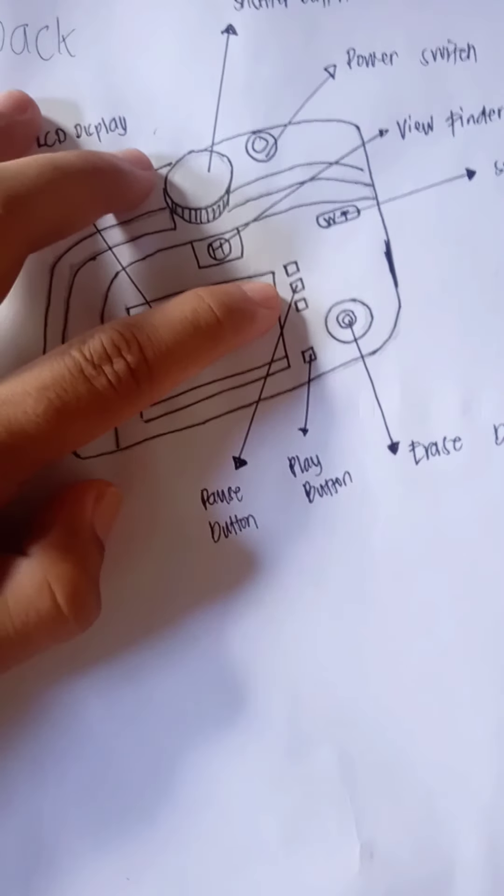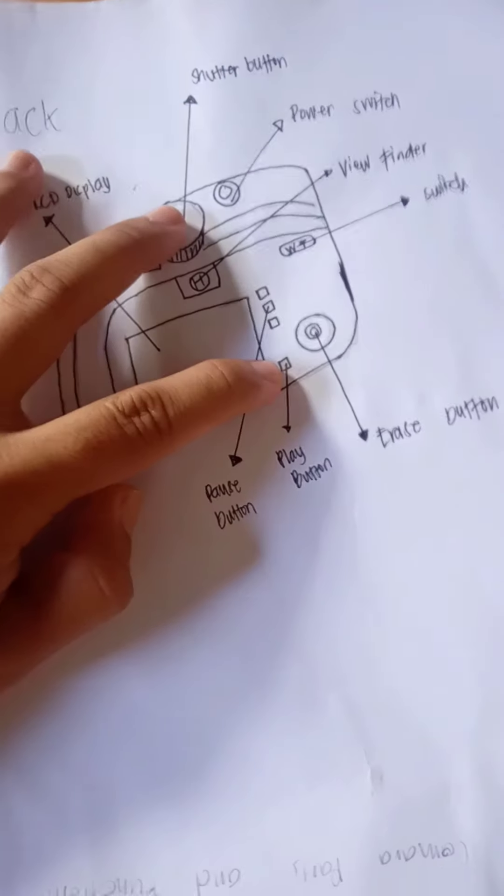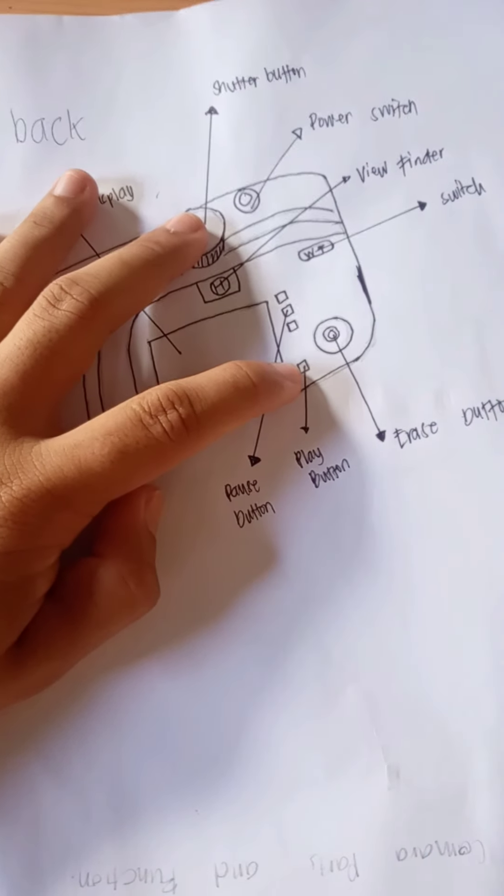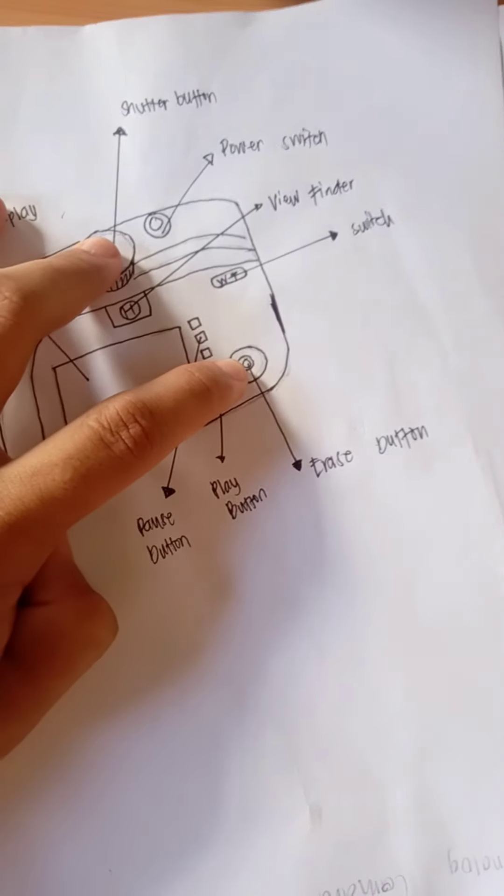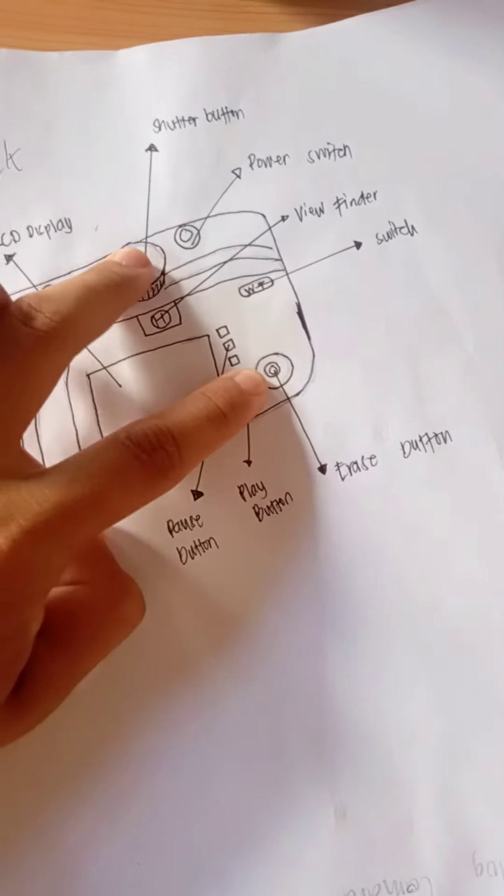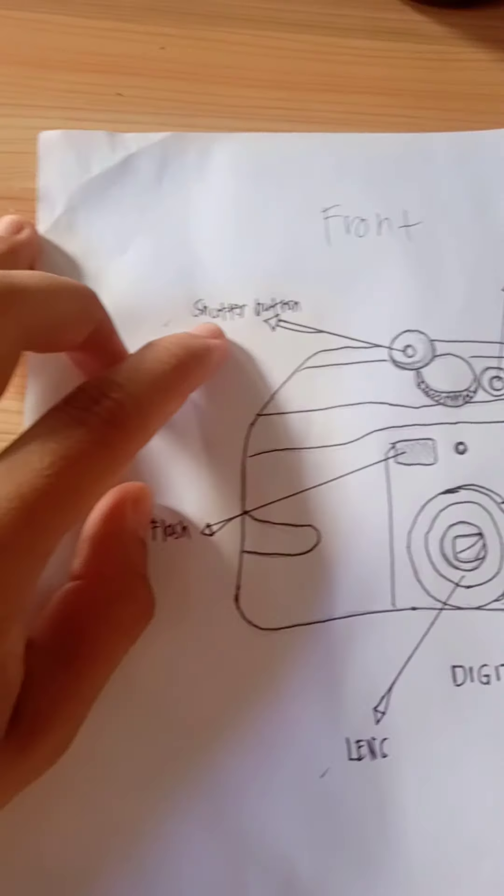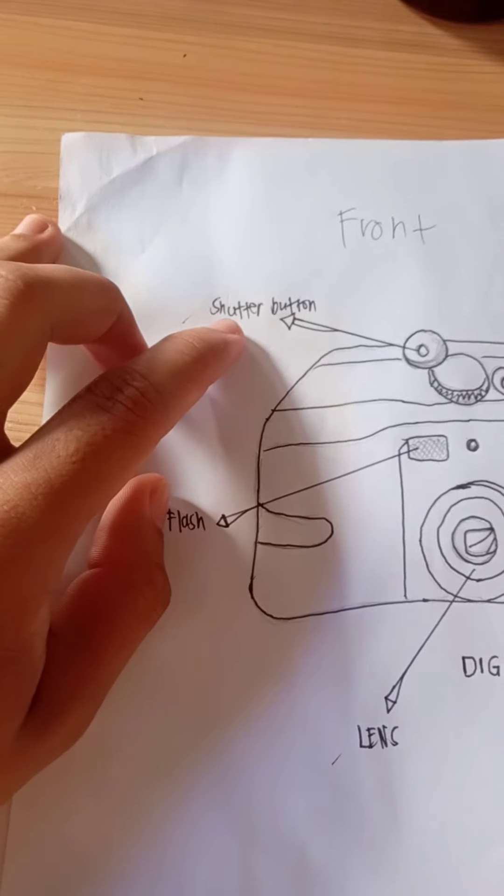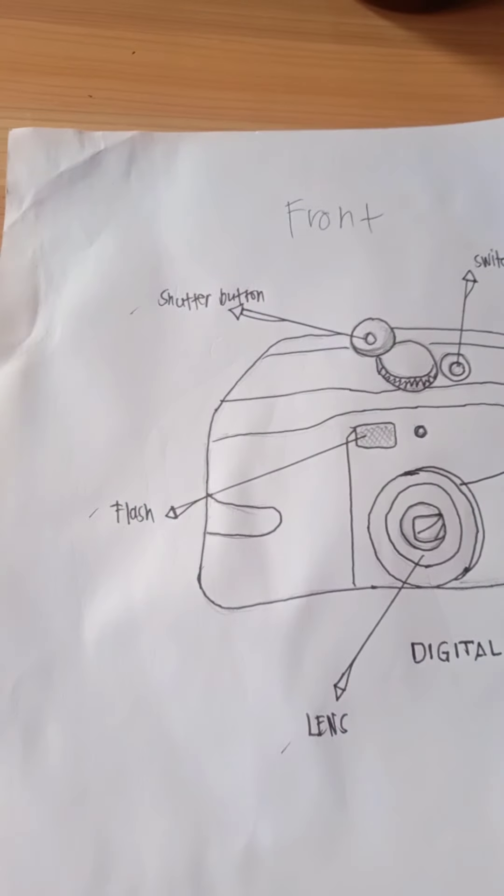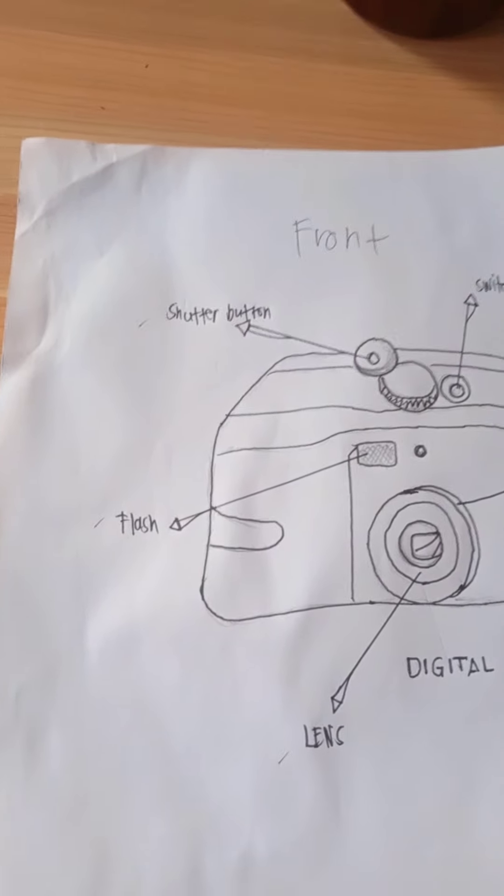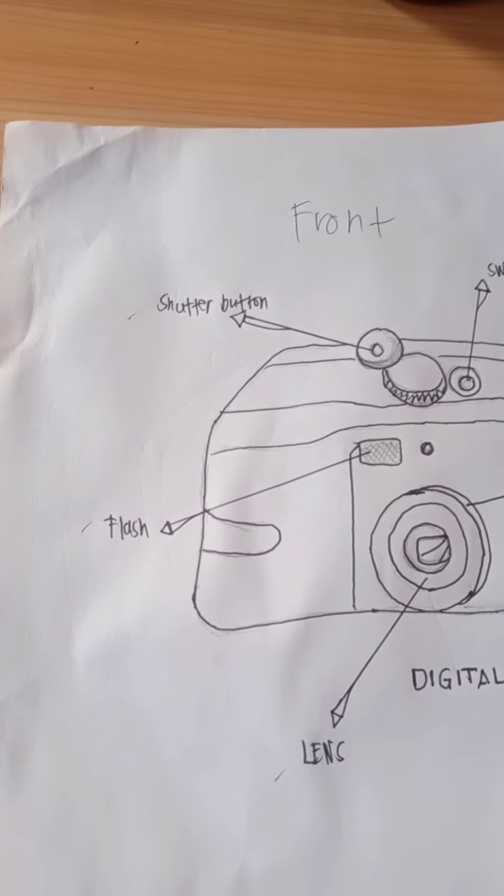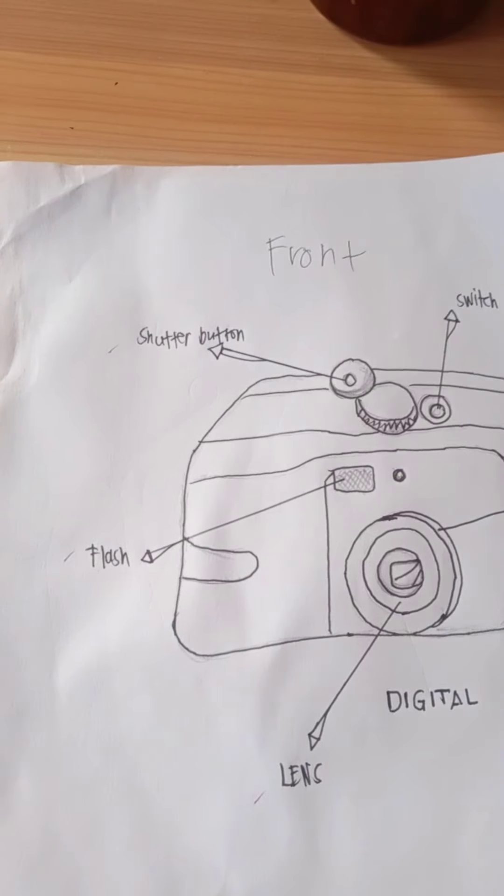Pause button used to pause the video. Play button used to play video. Erase button used to erase images or videos. Flash, it can be useful to provide a bit of extra light during dim, low light situations.